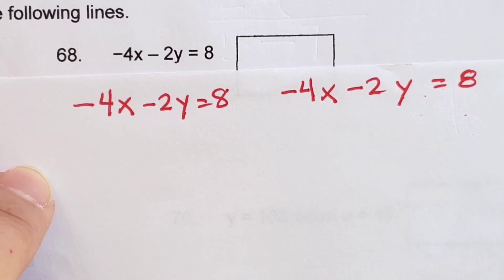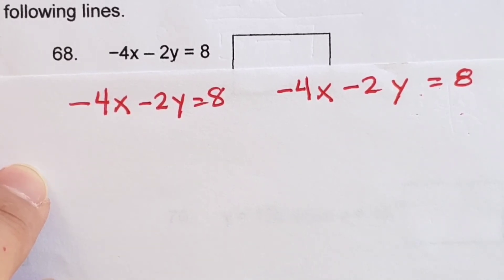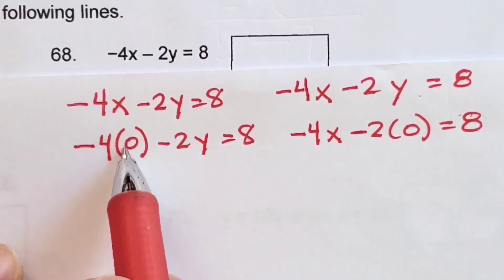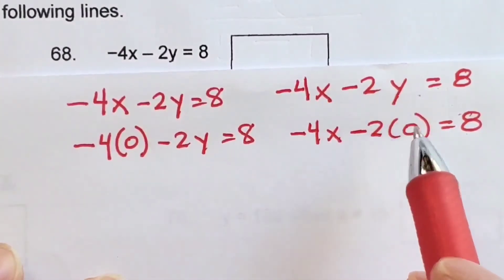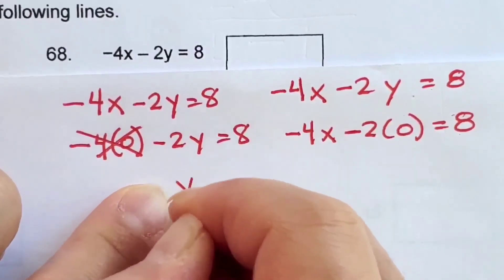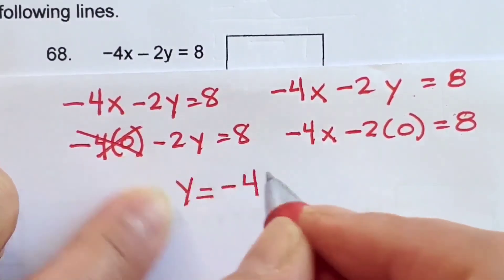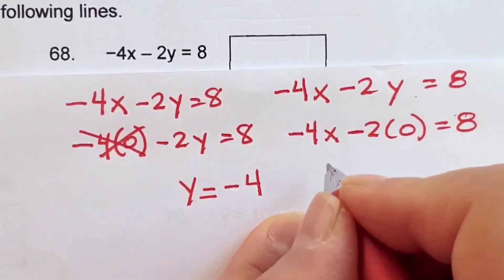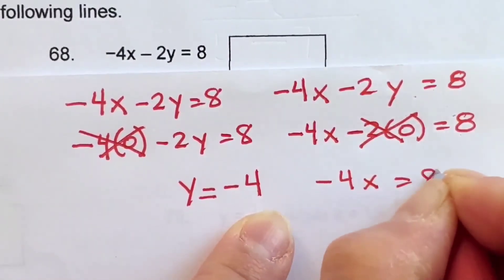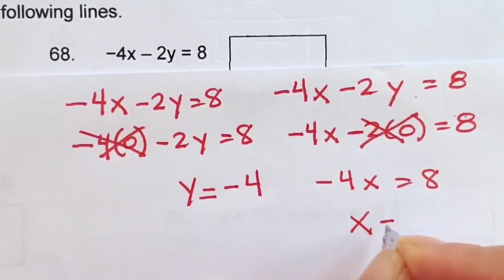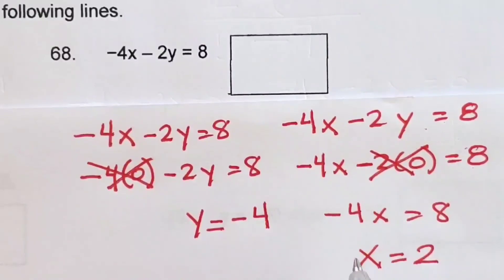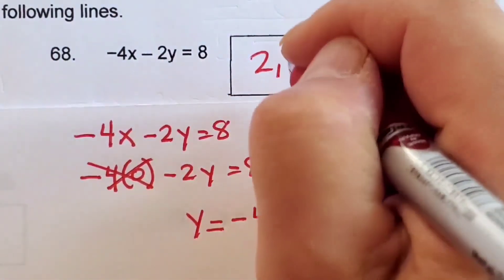For number 68: write the equation twice. Setting x to 0: negative 2 times y equals 8, so negative 4 times negative 2 gives positive 8, meaning y equals negative 4. Setting y to 0: negative 4x equals 8, so positive 2 times 4 gives positive 8, meaning x equals 2. My ordered pair: x is 2 and y is negative 4.